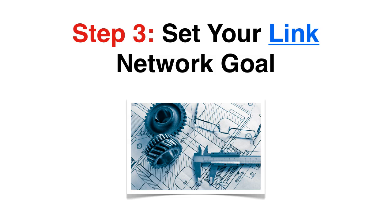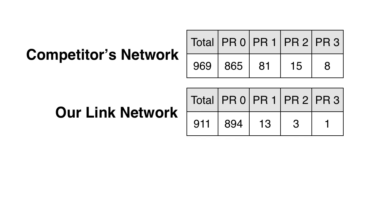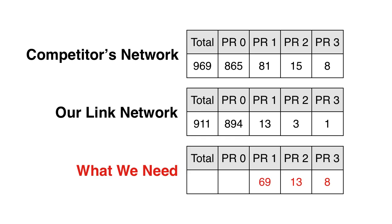Step 3: Set your link network goal. The next step in your SEO blueprint is to set yourself a realistic and achievable goal for building your link network. For our scrapbooking example, let's compare our current link network with the link network of our competitor. This comparison suggests that if we can get 8 PR3 links, 13 PR2 links, and 69 PR1 links, then we may be able to create a stronger link network than our competitor and move up one spot in the rankings.